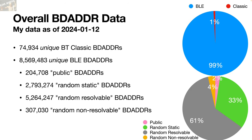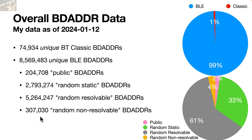I had many of these logs for many years, but I didn't get around to analyzing the data until May 2023, after completing my Vulnerabilities 1001 class for Open Security Training. As a quick overview of what the data looked like: I had 75 million Bluetooth Classic addresses — unique things — but that only adds up to 1% of my overall Bluetooth data. Of the Bluetooth Classic, 99% had 204,000 public BD adders. In BLE: 2.7 million random static, 5.2 million random resolvable, 307 random non-resolvable.